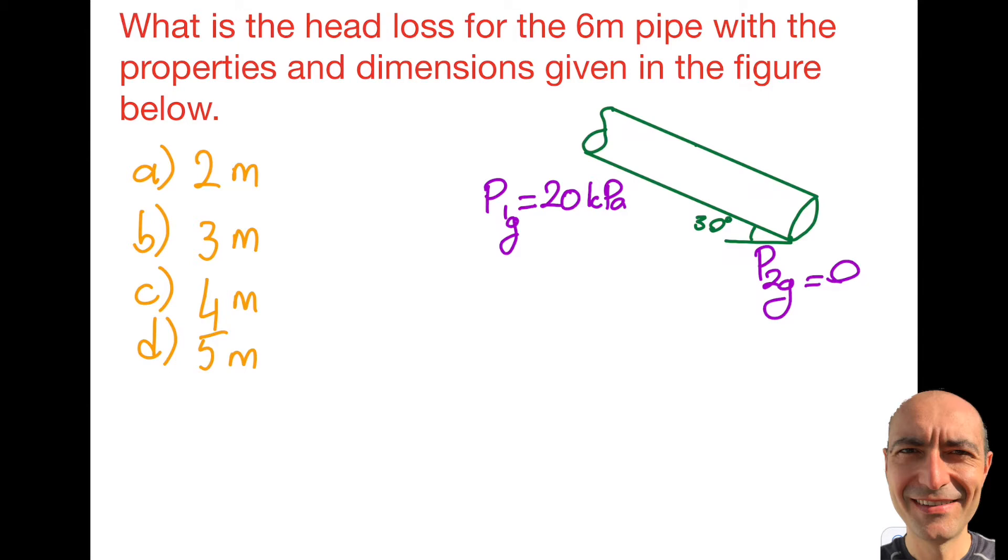I'm trying to find the head loss. The pressures are given in each section and you can see here that it just leaves to the atmosphere with gauge pressure as 0 and at this particular cross section my pressure is 20 kilopascals.